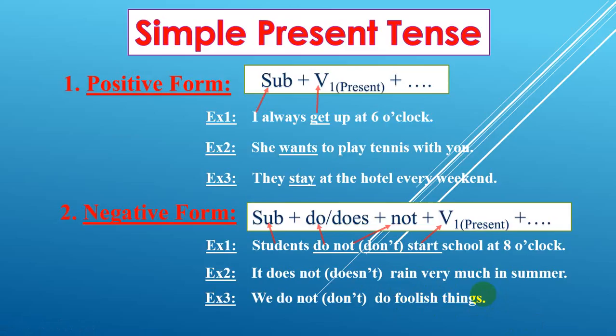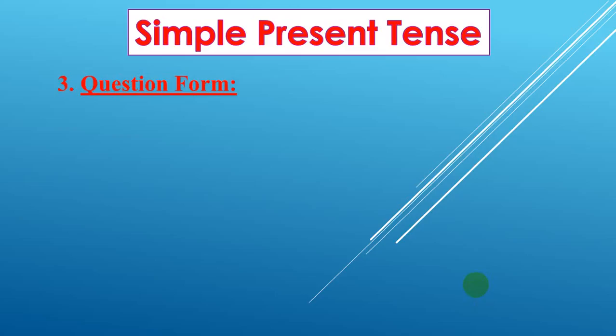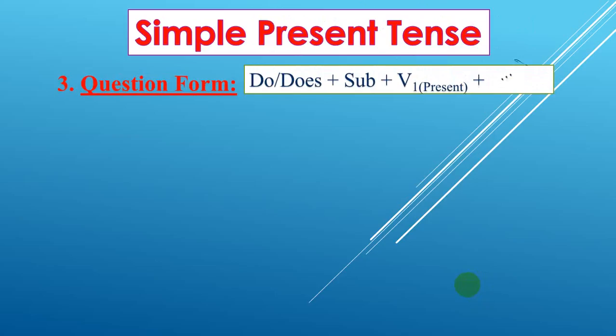So let's go to see the question form. How do we form the question? The form is: do or does, plus subject, plus verb one in Present Simple, plus the rest, plus a question mark. So we put do or does in front of the subject, and after that the subject, then verb one.